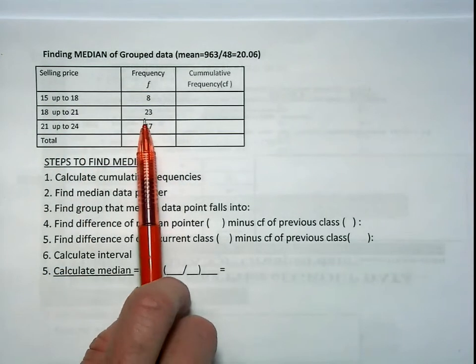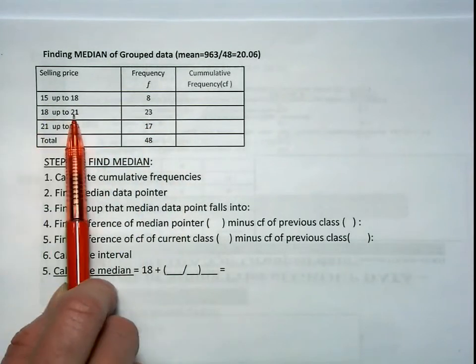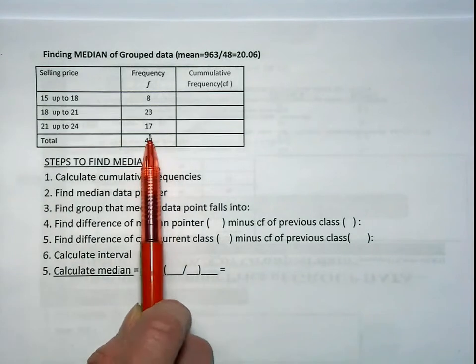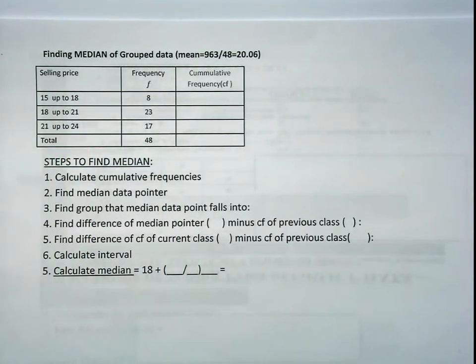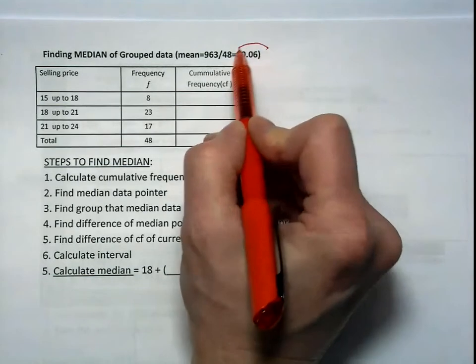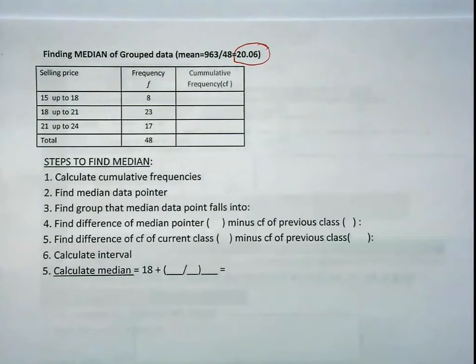We know 23 shirts were sold between $18 and $21, and we know 17 shirts were sold between $21 and $24. But we don't know the individual data points. I would like you to pause the video and calculate the mean for group data. You will have to find the midpoint, and your answer is 20.06.